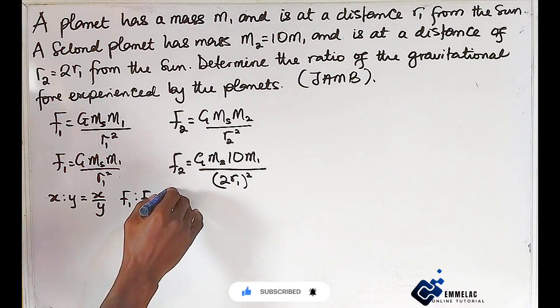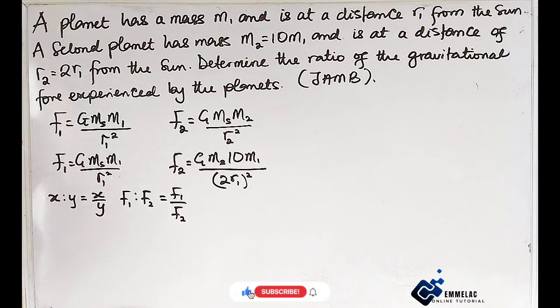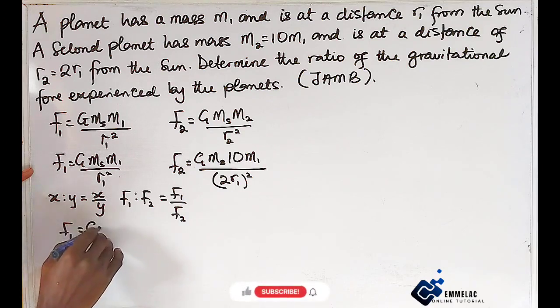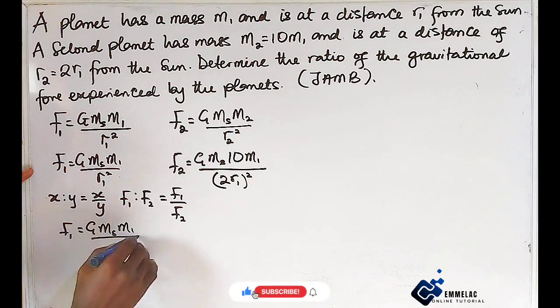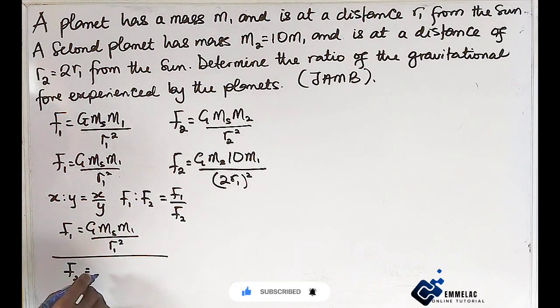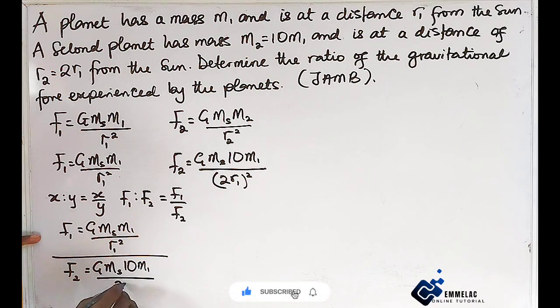To that end, we can see F1/F2 equals [GMsm1/r1²] divided by [GMs(10m1)/(2r1)²].